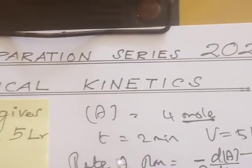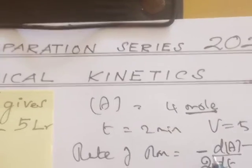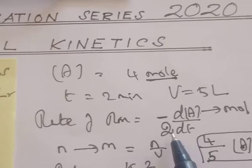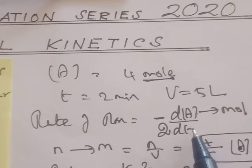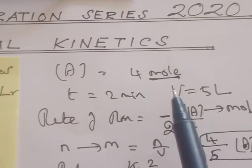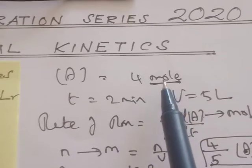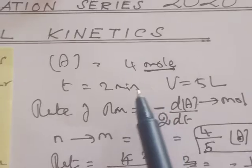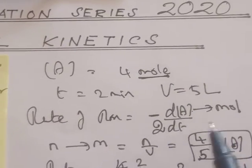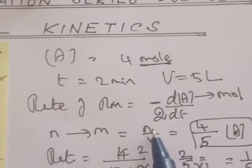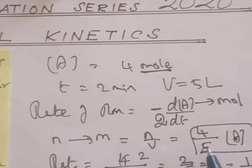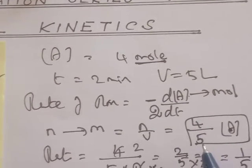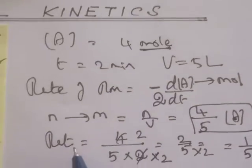The rate of reaction formula is: minus change in concentration of A, which should be in molarity, divided by the stoichiometry, with the change in time. The challenge in this sum is that the number of moles given must be converted into molarity. So molarity is equal to N by V. Here N is 4 moles and the volume of the vessel is 5, so 4 by 5 is the concentration.